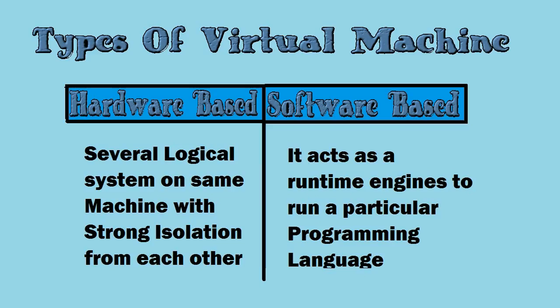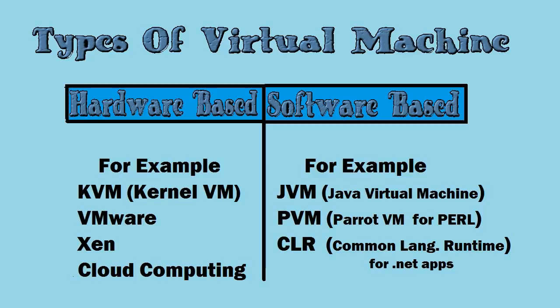Virtual machines are of two types: hardware-based and software-based. Hardware-based virtual machines provide several logical systems on the same computer with strong isolation from each other. Examples include KVM (Kernel-based Virtual Machine) for Linux systems, VMware, Xen, and cloud computing. The main advantage of hardware-based virtual machines is effective utilization of hardware resources.